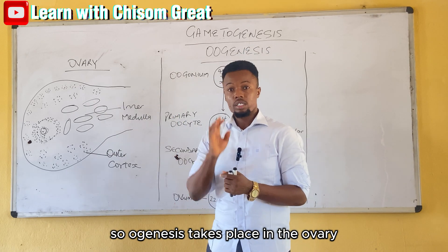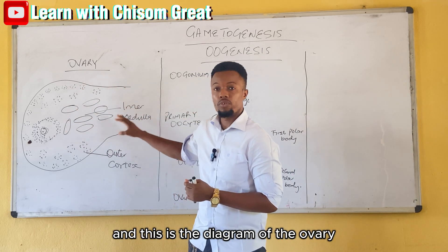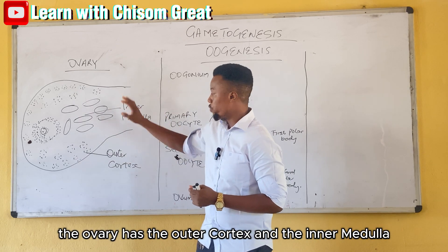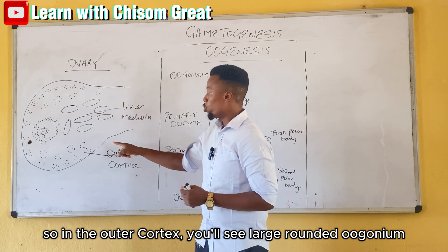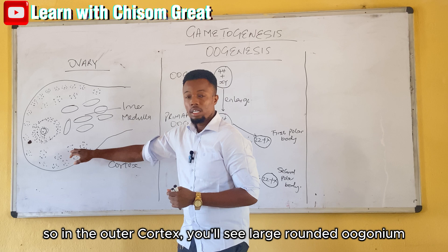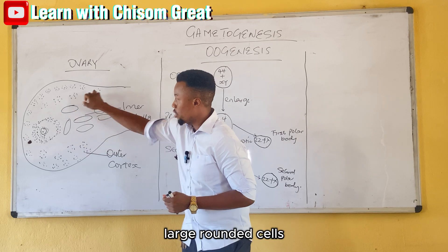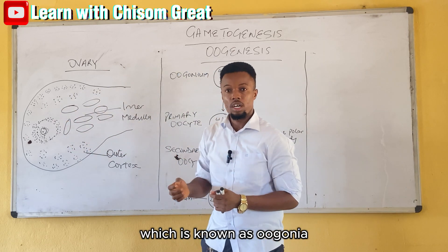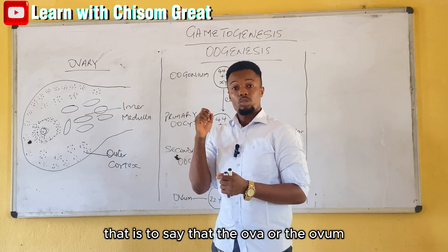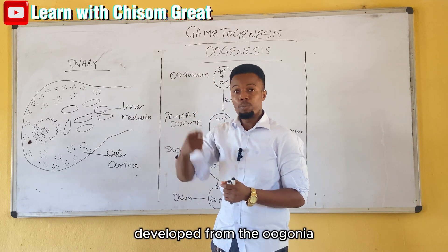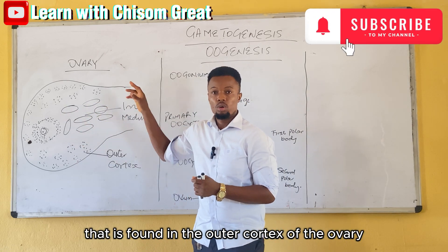Oogenesis takes place in the ovary. This is the diagram of the ovary, and as you can see, the ovary has the outer cortex and the inner medulla. In the outer cortex you see large rounded oogonia cells. The oogonia is the progenitor for the ovum — that is to say that the ovum develops from the oogonia found in the outer cortex of the ovary.